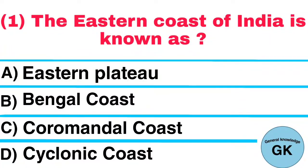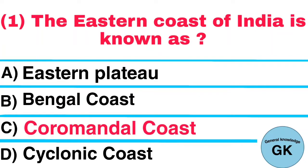Question number 1. The eastern coast of India is known as: A. Eastern Plateau, B. Bengal Coast, C. Karomandal Coast, D. Cyclonic Coast. Answer: Karomandal Coast.